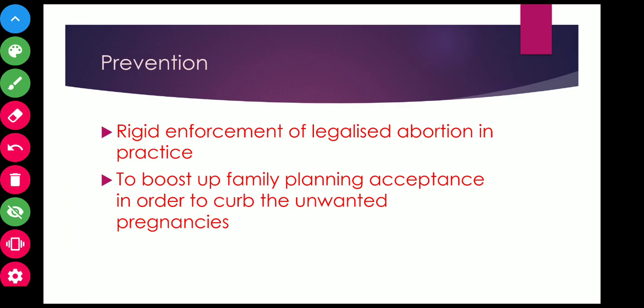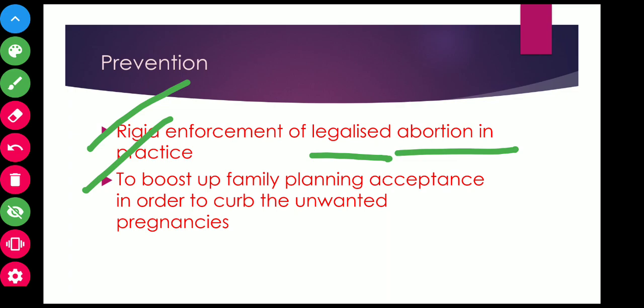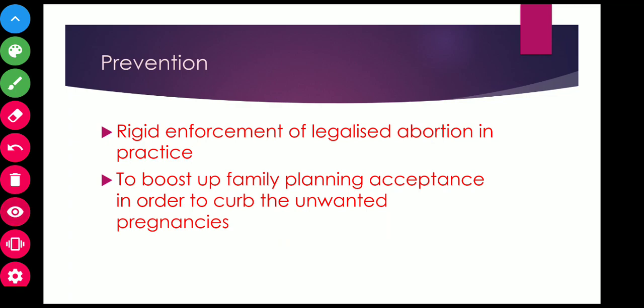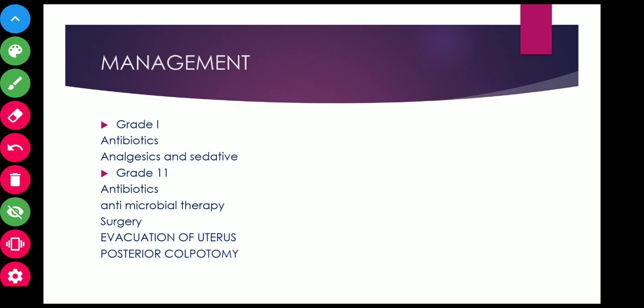For prevention, since septic abortions and infections occur following illegal induced abortion, we need rigid enforcement of legalized abortion in practice with proper septic precautions. We also need to boost up family planning acceptance in order to curb unwanted pregnancies, because women seek illegal abortion due to unwanted pregnancy. Boosting family planning — whether permanent or temporary — can help prevent septic abortion.